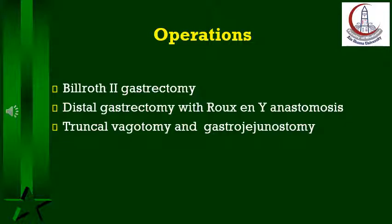Therefore distal gastrectomy is usually needed. Restoration of continuity is through anastomosing the remaining upper half of the stomach to a jejunal loop — an operation known as Billroth 2. To avoid biliary gastritis and other complications, a Roux-en-Y anastomosis is done instead of the simple loop anastomosis. This distal gastrectomy with Roux-en-Y anastomosis gives the best long-term results and is preferred by most surgeons. If the stomach is still not much dilated and retains good peristalsis, vagotomy and a drainage procedure in the form of gastrojejunostomy could be done without distal gastrectomy.